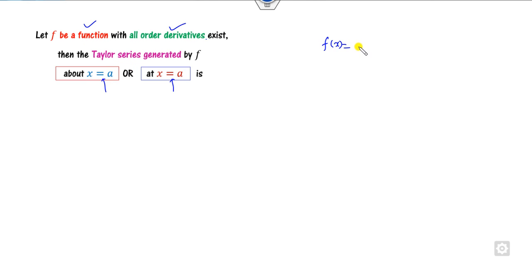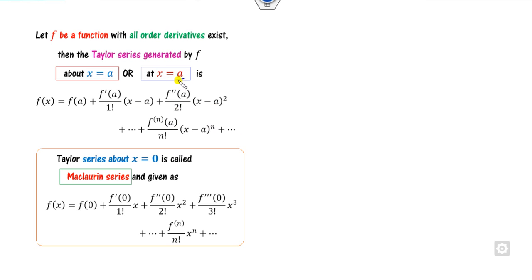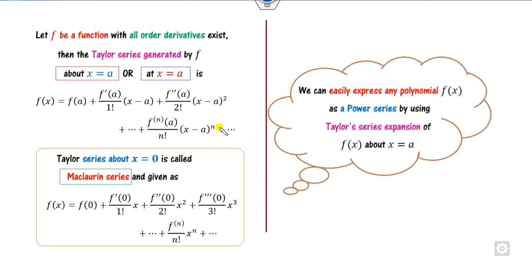For example, consider ln(1 + x). This is not defined when x = −1, so the Taylor series is not applicable at x = −1. However, for all x apart from −1, the function is well-defined and you can define the Taylor series on that domain. The Taylor series of f about x = a is: f(a) + f'(a)/1! · (x−a) + f''(a)/2! · (x−a)² + ... and so on. A major advantage of the Taylor series is that we can express any function f(x) as a power series.